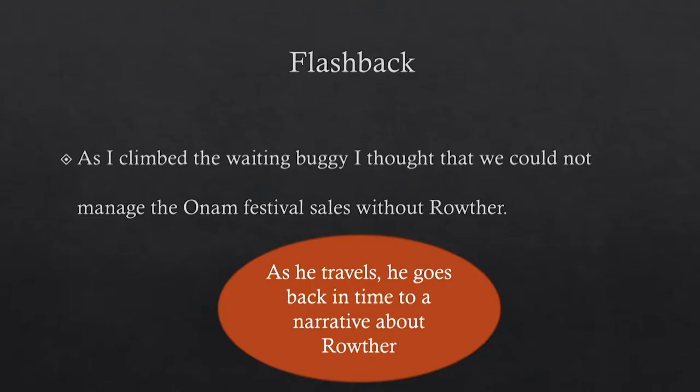This is how the flashback is introduced. The boy climbs into the waiting buggy and thinks: 'As I climbed the waiting buggy, I thought that we could not manage the Onam festival sales without Rawatha.' And as he travels in the horse carriage, he goes back in time to that particular evening when there was this clash between Rawatha and his father, capturing the entire battle of egos with dialogues and comments precisely in his narrative.